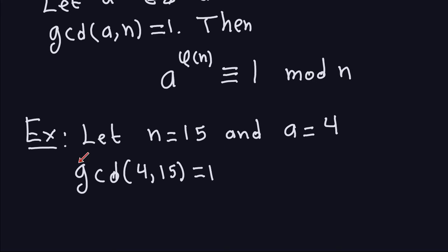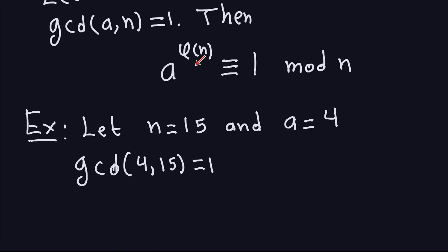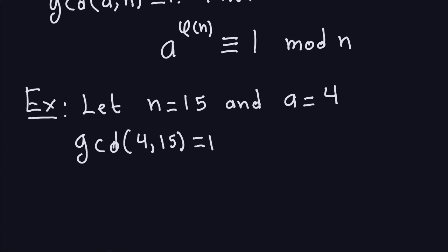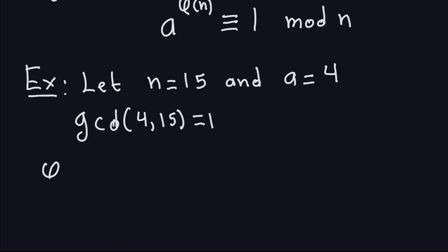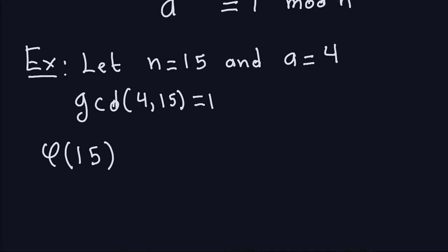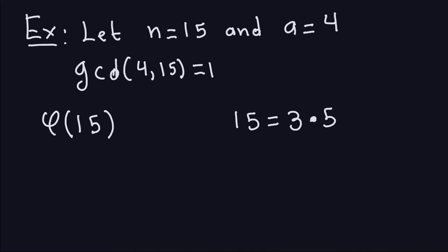This is an important property to apply this theorem. So I need to compute phi of n, which means computing phi of 15. To do it in a faster way, we look at the canonical decomposition of this number in primes. We can write 15 as 3 times 5, and from there we can determine what phi of 15 is.